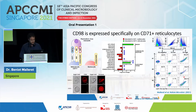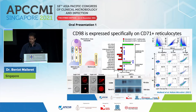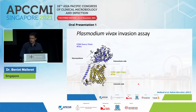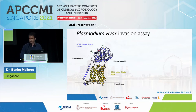We also characterized CD98 expression by immunofluorescence; it is present on reticulocytes and not on normal red blood cells. The same was confirmed by Western blot, showing CD98 expression on immature reticulocytes and decreased expression during maturation. CD98 is a complex molecule with an extracellular heavy chain and an intracellular light chain. We used antibodies targeting the extracellular part of this protein to try to block P. vivax invasion.